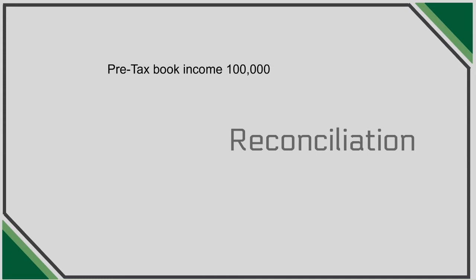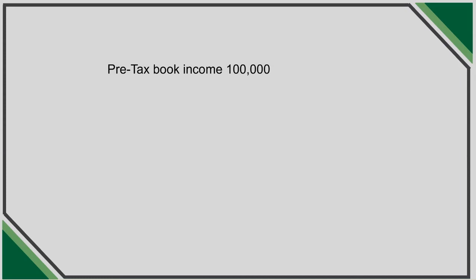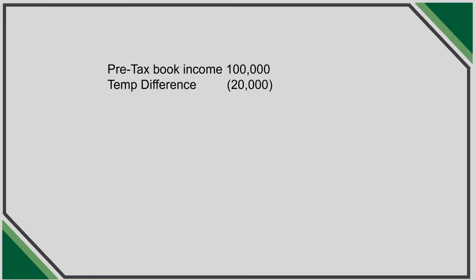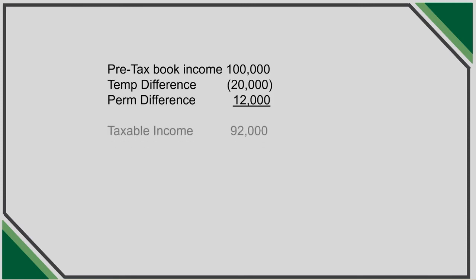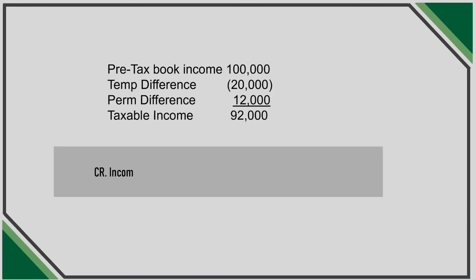For example, let's assume a company has pre-tax book income of $100,000. They have a $20,000 temporary difference due to depreciation during the year, and a permanent difference related to non-deductible entertainment expenses. Taxable income after making these book-tax adjustments is $92,000. The company computes its income tax payable by multiplying taxable income of $92,000 by the statutory rate of 21% to get $19,320.